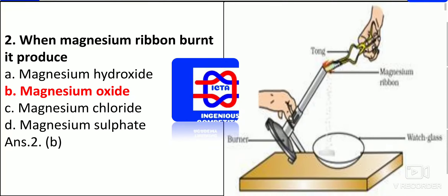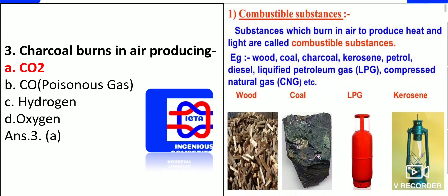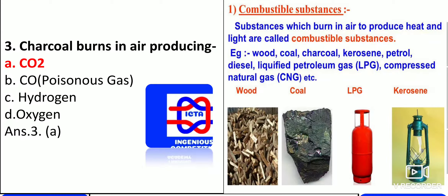When the magnesium ribbon is burnt, it produces magnesium oxide. Please remember the chemical formula: magnesium oxide is MgO, magnesium hydroxide is Mg(OH)2, magnesium chloride is MgCl, and magnesium sulphate is MgSO4. Along with all multiple choice questions, please remember the chemical formulas also.